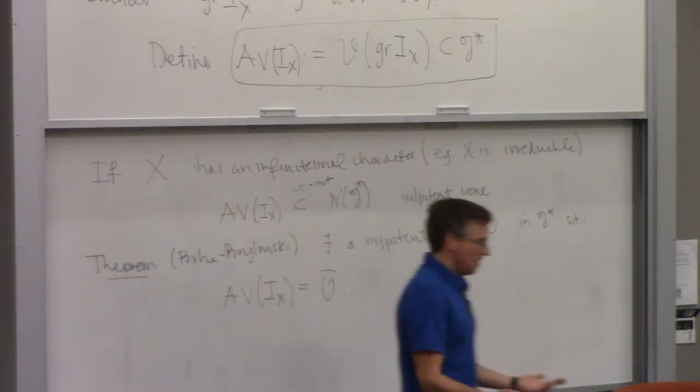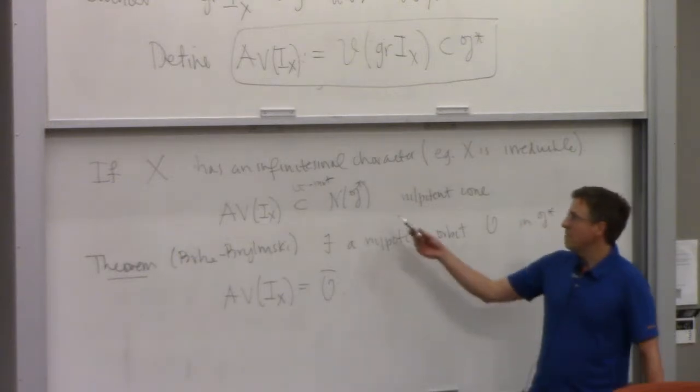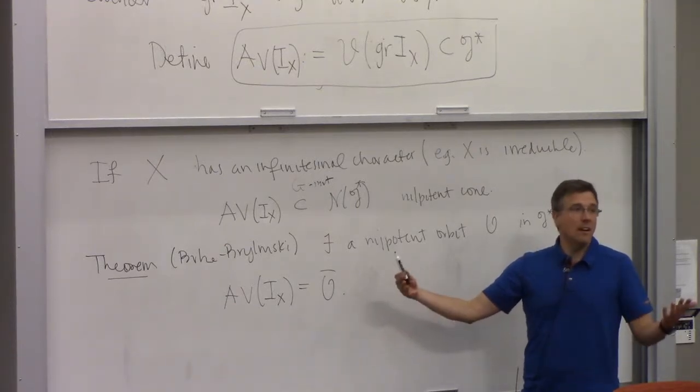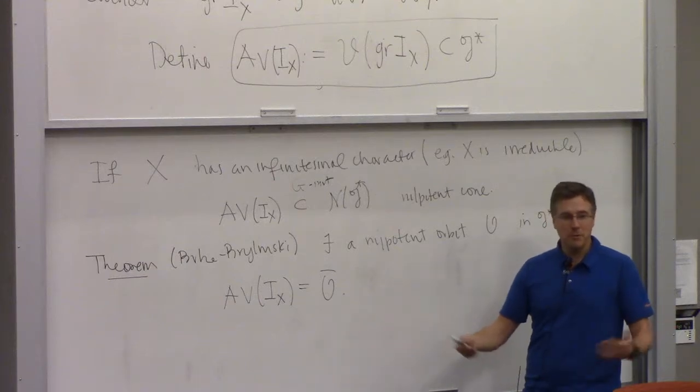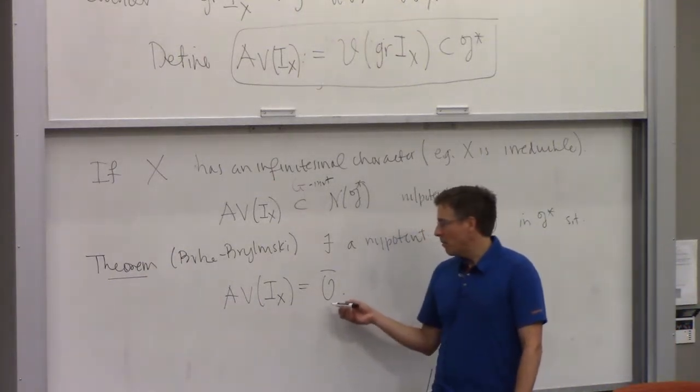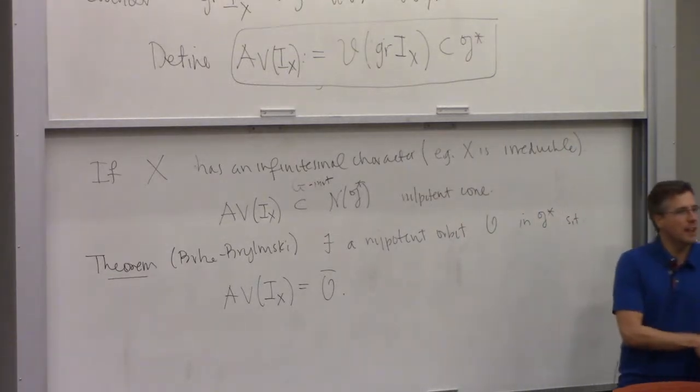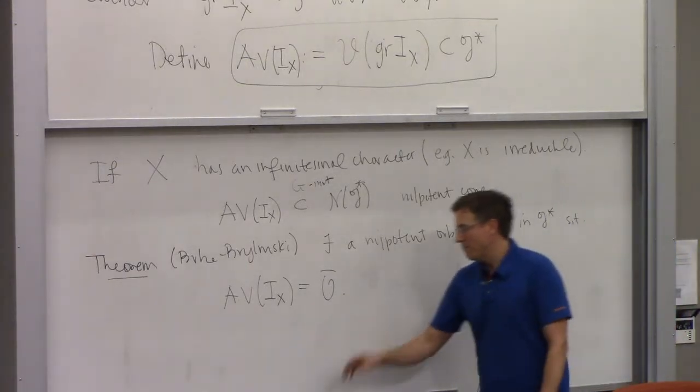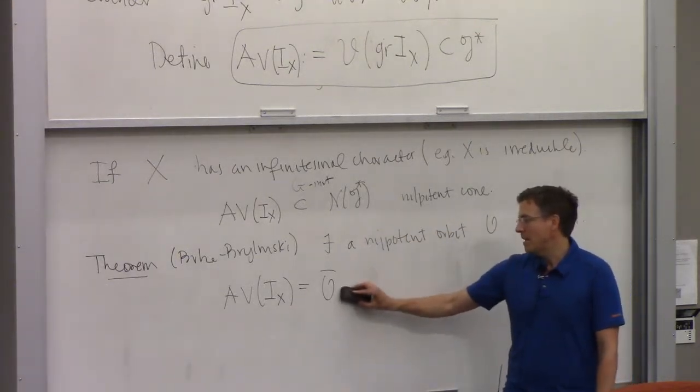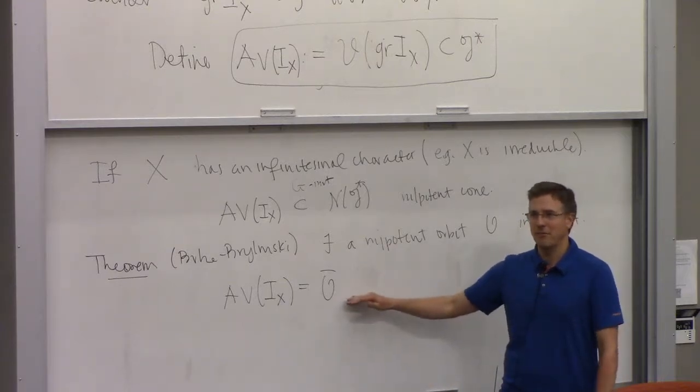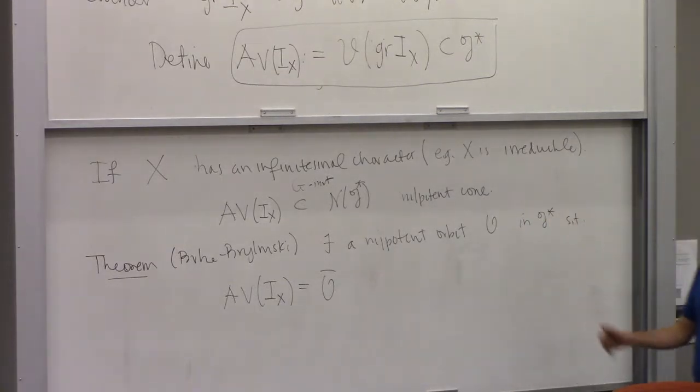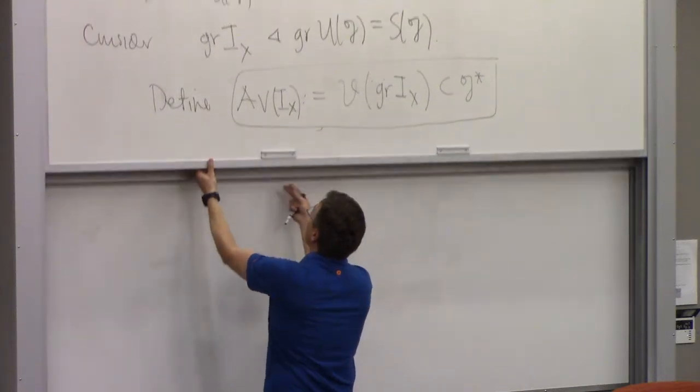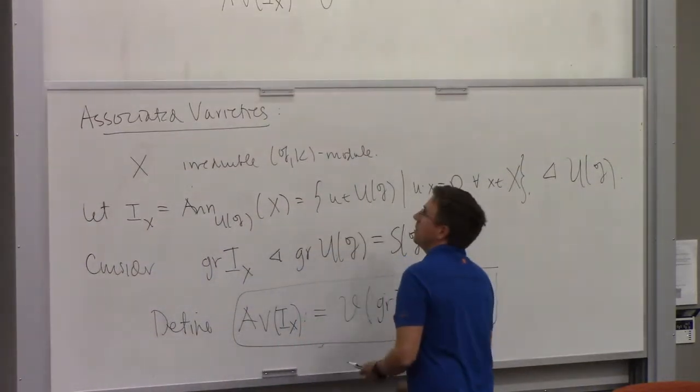And according to results of Kostant, that restriction is exactly what I've written down here. But in fact, more is true. So if G is the complex group floating around, then this is going to be G invariant. It's a sub-variety of the nilpotent elements. G acts by coadjoint on the nilpotent cone. So this associated variety is a union of closures of nilpotent elements, complex nilpotent orbits on N of G star. But in fact, it's the closure of a single one.